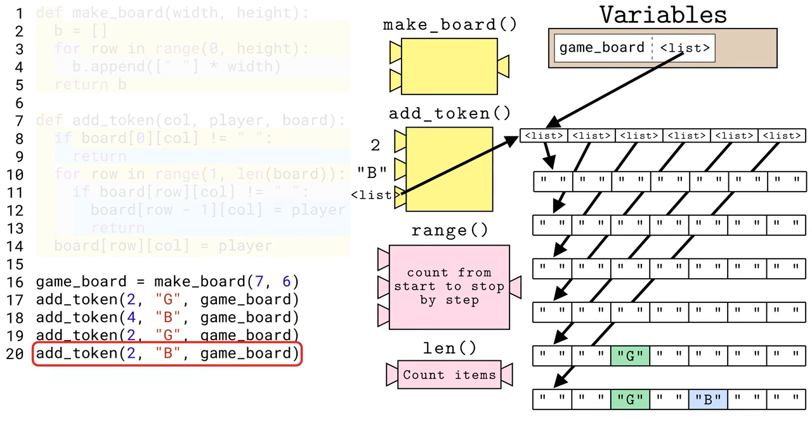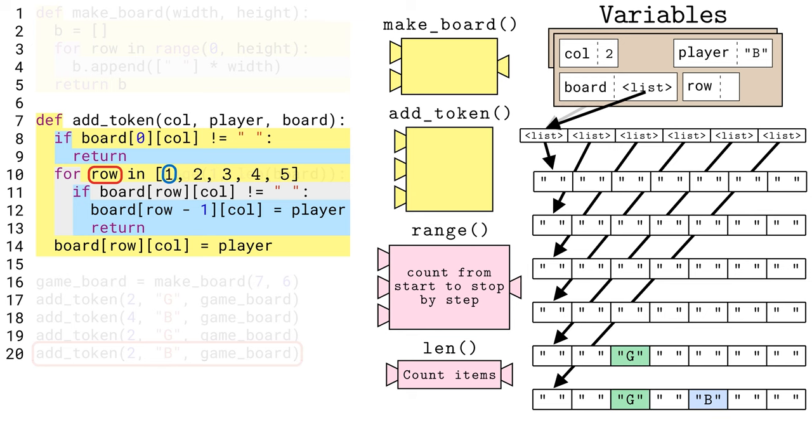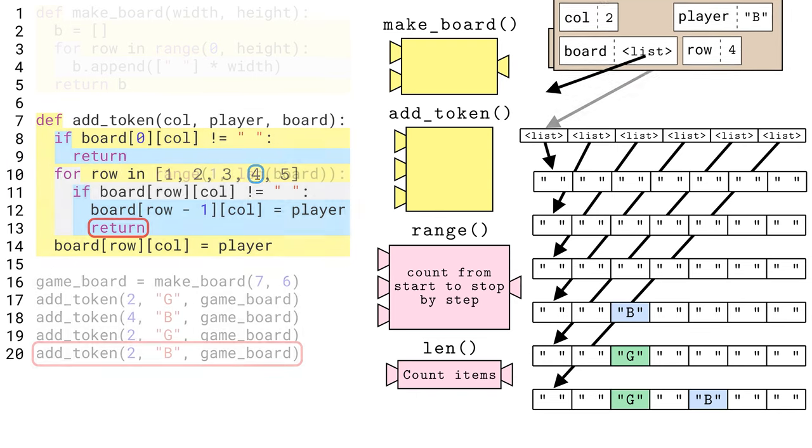Let's see one more example of putting a B token on top of a stack of existing tokens. When the for loop and conditional identify that row 4 column 2 has a token, line 12 puts the token in row 3 column 2. The return statement immediately stops the function.